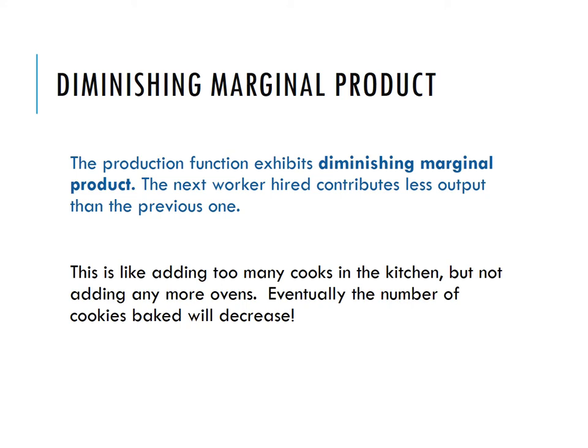When you keep adding cooks in the kitchen without changing the number of ovens, things get hectic, and those additional workers aren't as productive. Eventually, you could add so many new cooks without adding ovens that the number of cookies actually goes down. That's not what we saw in the previous slide, but it's possible.